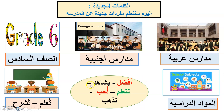Also I can say: يشاهد الولد التلاميذ في المدارس الأجنبية أو في المدارس العربية. Or: الولد يشاهد التلاميذ في الصف السادس — grade 6. We can use نتعلم — we learn: نحن نتعلم المواد الدراسية في مدرسة أجنبية. And نذهب — go: نحن نذهب إلى مدرسة أجنبية أو مدارس أجنبية. Also: المعلمة تعلم التلاميذ في المدارس الأجنبية أو في المدارس العربية.